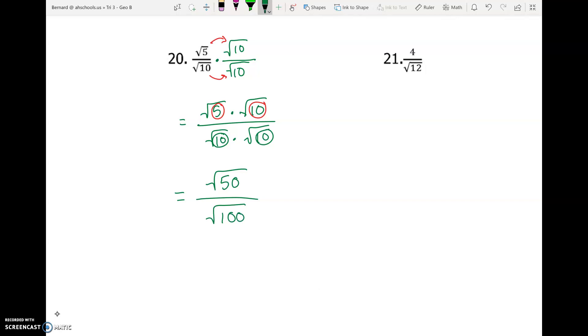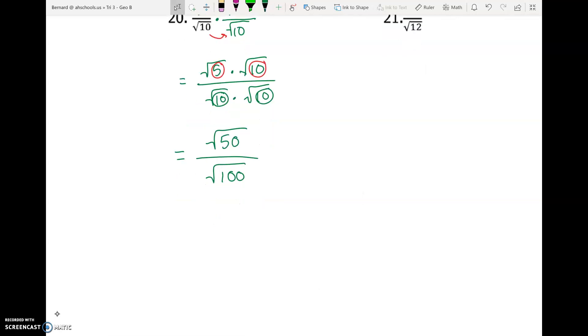Now, there's a reason why we are doing this. Because every time we multiply the bottom by a number that is the same number as itself, it's going to give us a perfect square.